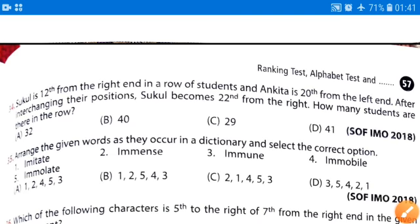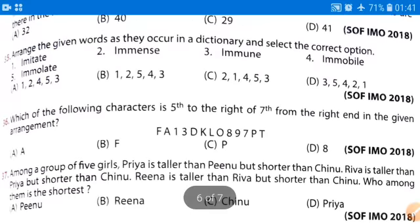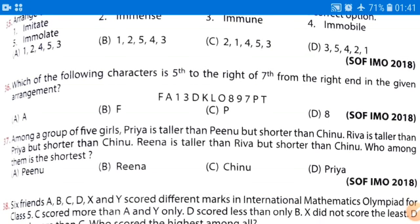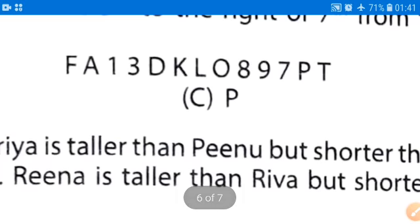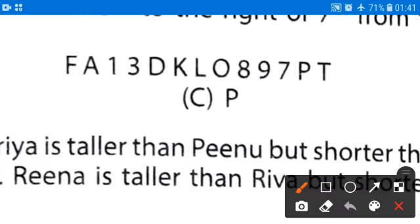Now, coming to the next question that is question number 36. Which of the following characters is fifth to the right of seventh from the right in the given arrangement? This is the arrangement. First, we will find out the seven to the right. This is the right direction. This is the left direction.